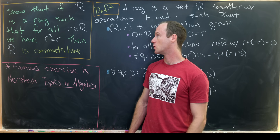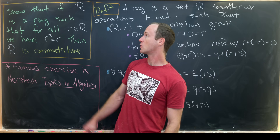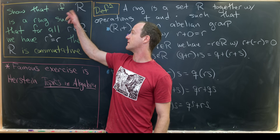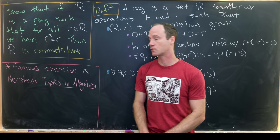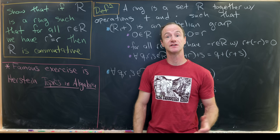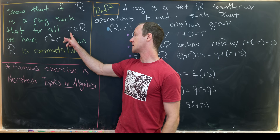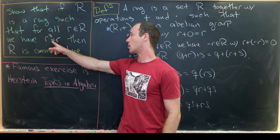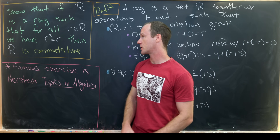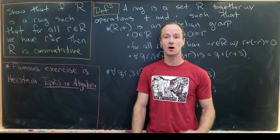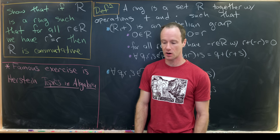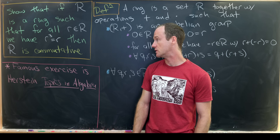So what's our goal? Our goal is to show that if R is a ring such that for all little r in R, we have r cubed equals r, then R is commutative.